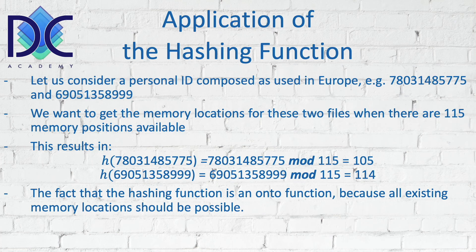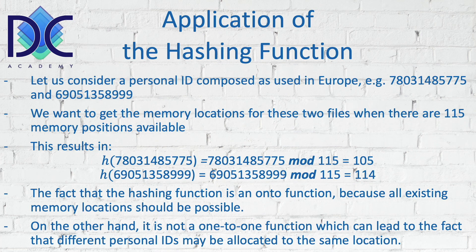The hashing function is an onto function because all existing memory locations should be reachable — everything maps to the possible memory locations we have. However, it is not a one-to-one function, and we may have two different personal IDs allocated to the same location. That is a problem — it's not possible to store both there, so we have to find a solution for what to do with that information.